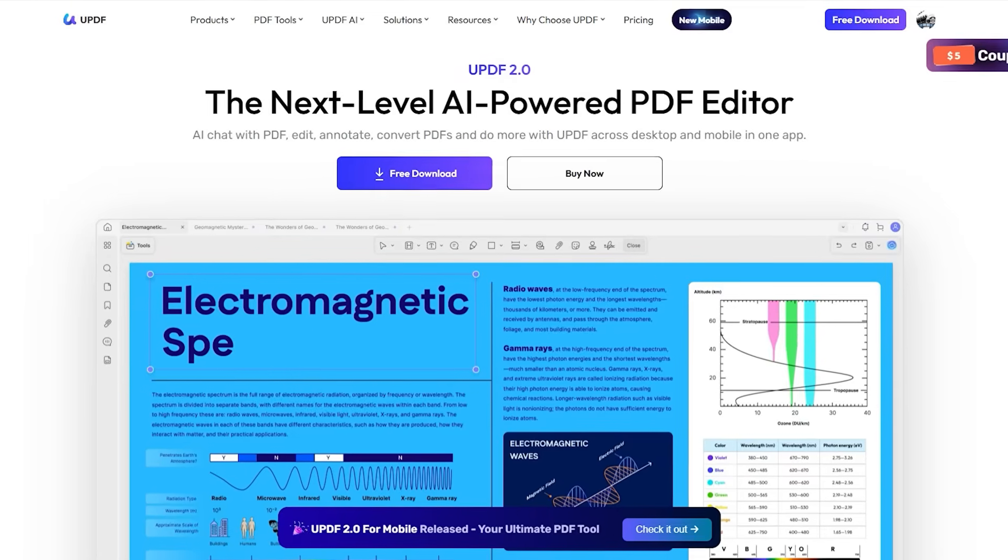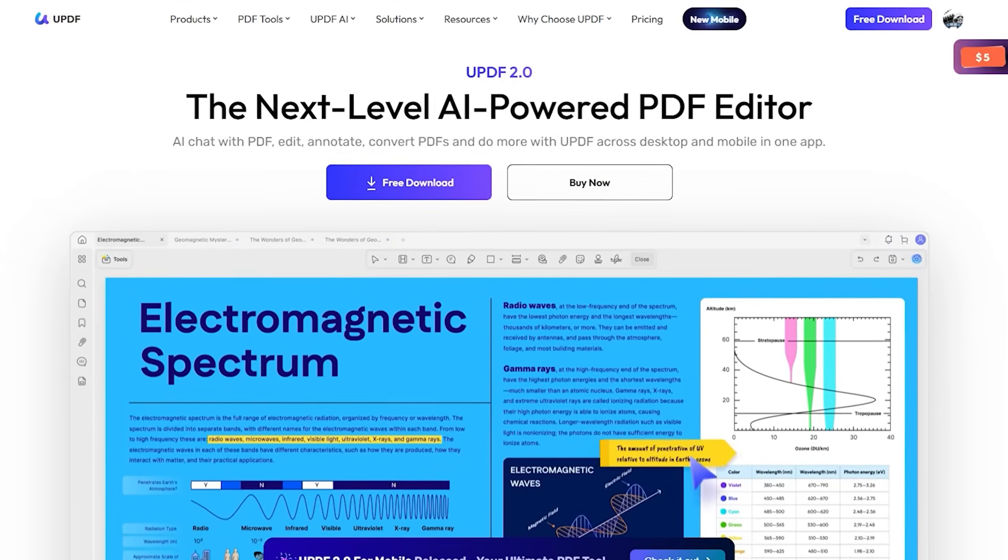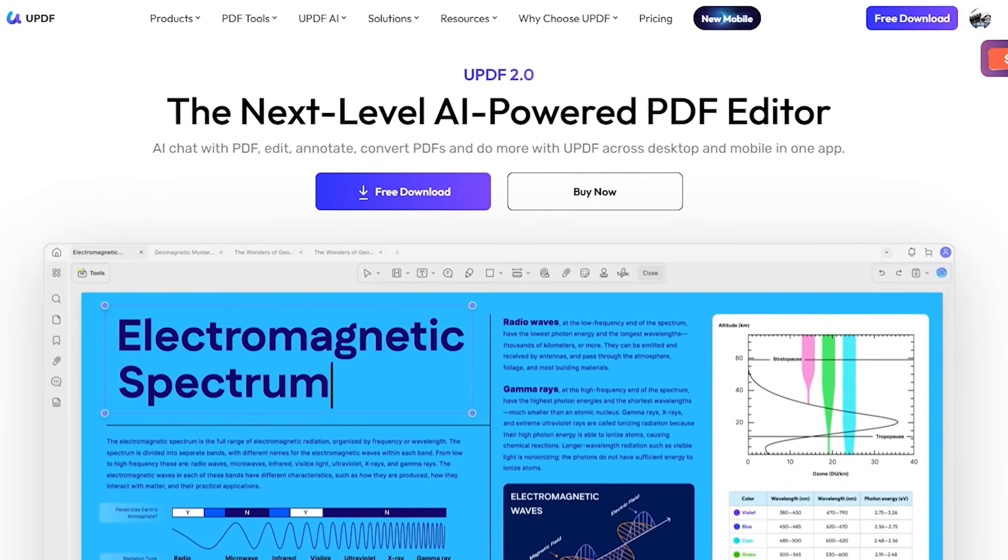What I also love is that UPDF works on Windows, Mac, and iPad. I can start reading an article at home and then continue with it in the lab. And all of this comes at just one-sixth the price of Adobe. If you're also working with lots of research papers, reports, or manuals, give UPDF 2.0 a try. There's a special launch promotion available right now, you'll find the links in the description and in the pinned comment.